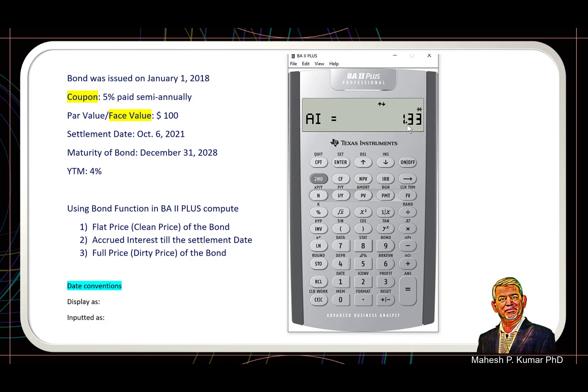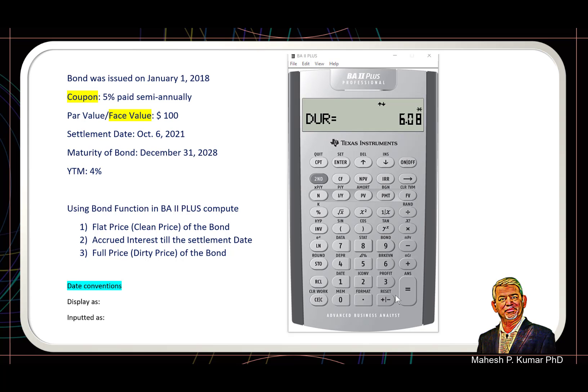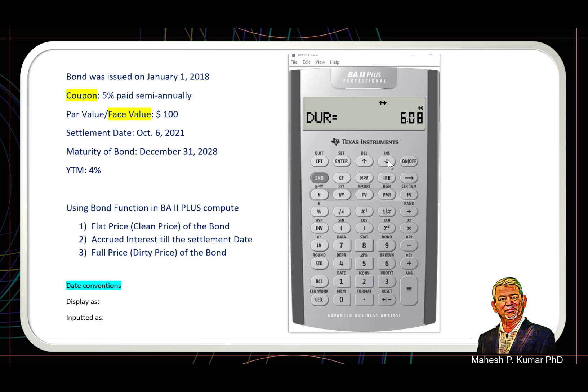And it shows that accrued interest is 1.33. So we add to that, recall 1, is equal to—so this 107.55 is actually the full price of the bond. And although we have not talked about duration yet, the duration of the bond is 6.08. So inbuilt bond function also gives us duration of the bond.